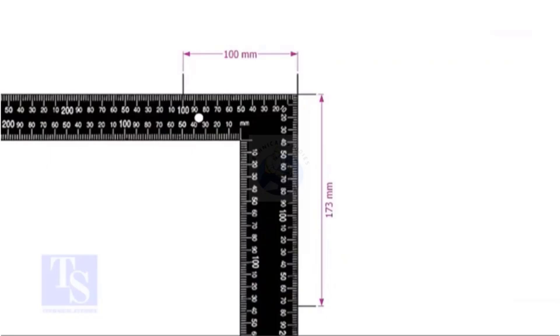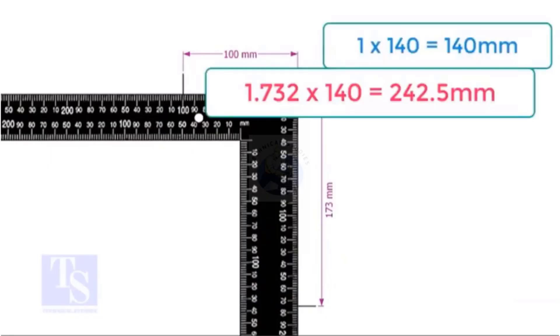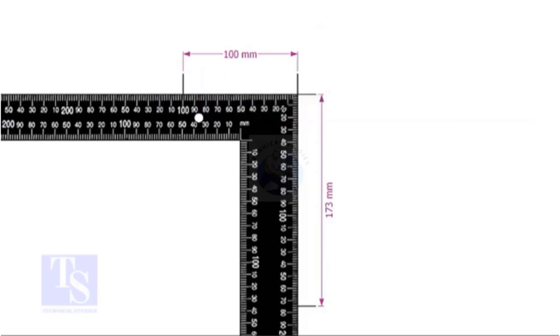You can choose any number. For example, if you choose 140, multiply 1 by 140 and 1.732 by 140. Mark the results of the multiplications on the right angle as shown.